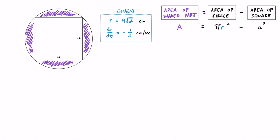Next, we want to relate the variables r and a so we can make a substitution and deal with just one variable. Let's focus on the radius. The radius goes from the center to the edge, so the diameter — going all the way across — is 2r. That diameter is also the hypotenuse of a right triangle formed by the square's diagonal.